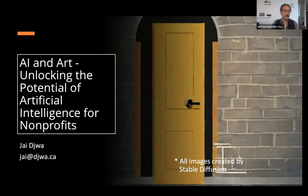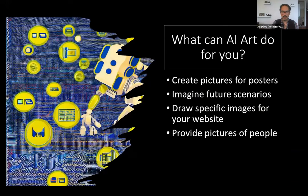I'm going to be talking about AI and art, unlocking the potential of artificial intelligence for nonprofits. All the images were generated by an AI art process. I use Stable Diffusion, and I'll talk a little bit more about that in a moment. So what can AI art do for you? If you're a scrappy nonprofit, there's a lot of things: creating pictures for posters, imagining scenarios, drawing very specific images for your website, and also providing images or pictures of people.